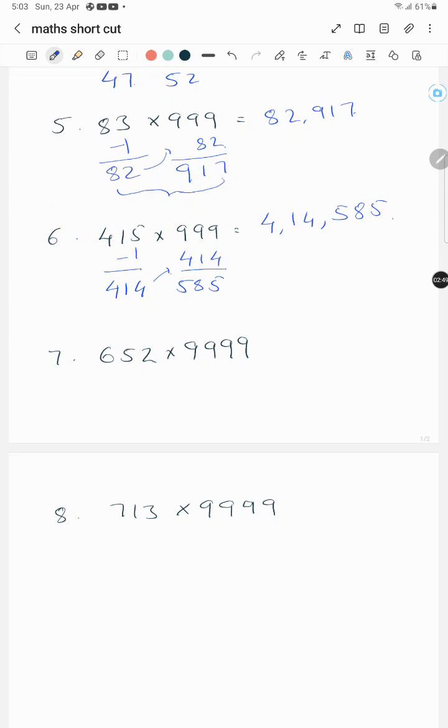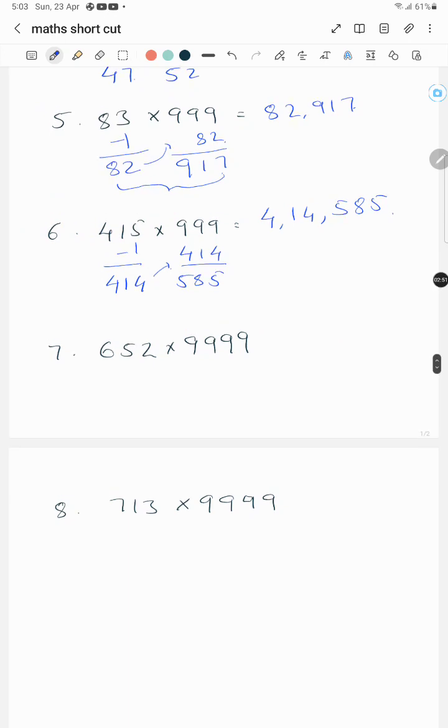Let's see one more example by extending this to 4 nines. So it is minus 1, that is 651, and subtract this 651 from this, this is 8348, which is equal to 651,348.